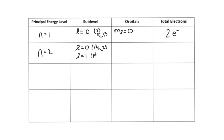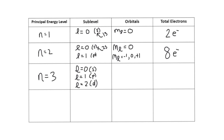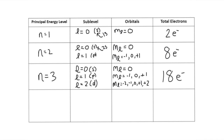The second energy level has four orbitals total — M sub L equals 0 for the S sublevel, and M sub L equals negative 1, 0, and positive 1 for the P sublevel. Since there are four orbitals and each holds a maximum of 2 electrons, this energy level can hold 8 electrons. On the third energy level, N equals 3, there are three sublevels: S, P, and D. There are 9 orbitals total, so the third energy level can hold 18 electrons.